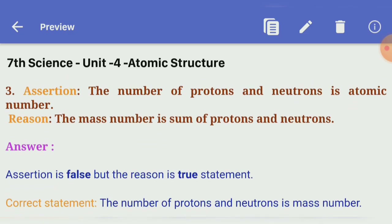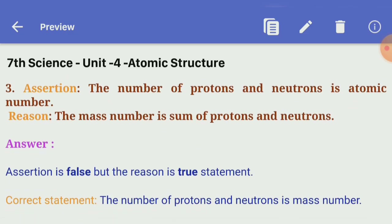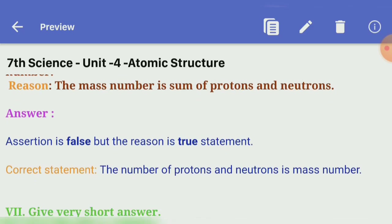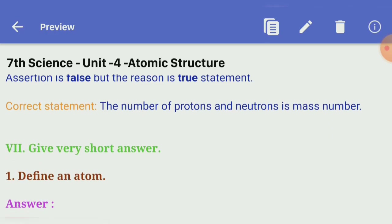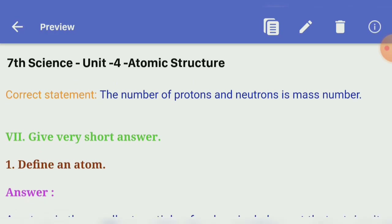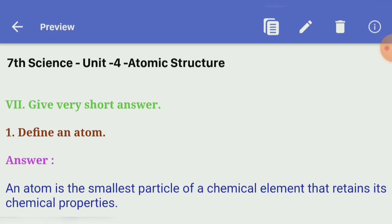Third: Assertion — the number of protons and neutrons is the atomic number. Reason — the mass number is the sum of protons and neutrons. Answer: assertion is false but reason is true. Correct statement: the number of protons and neutrons is the mass number.